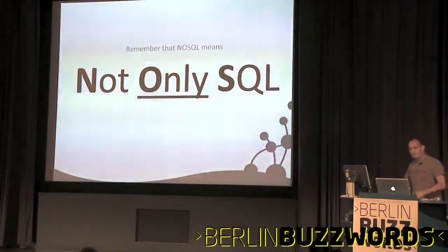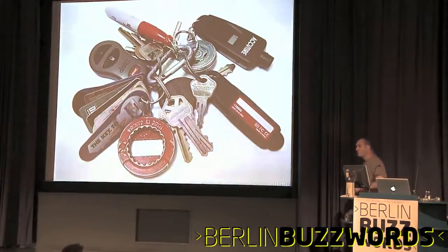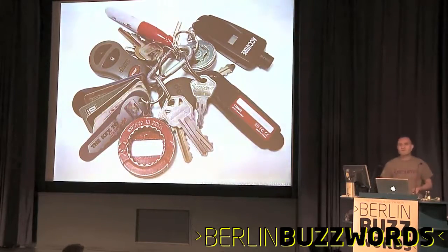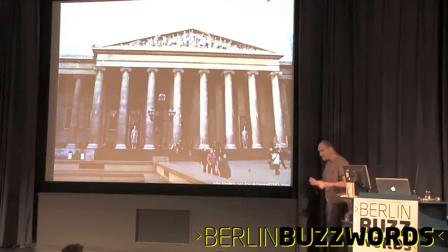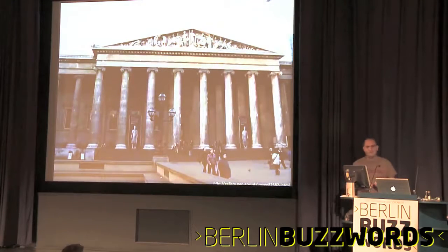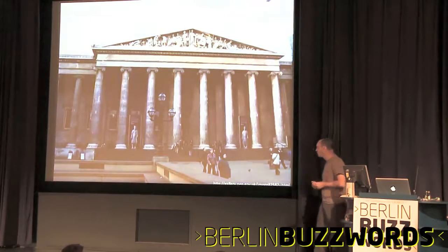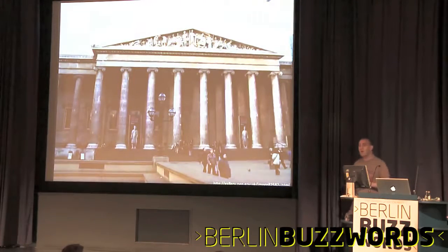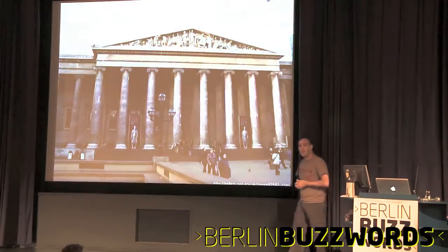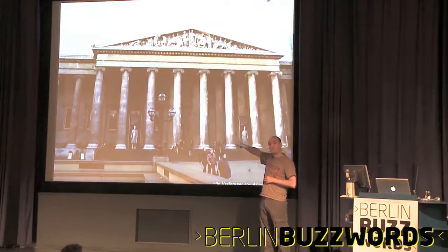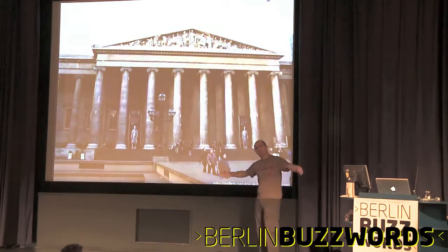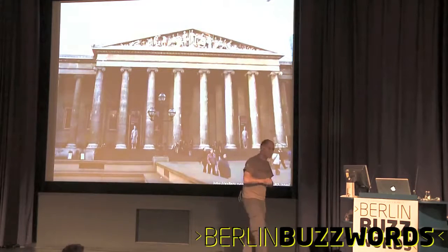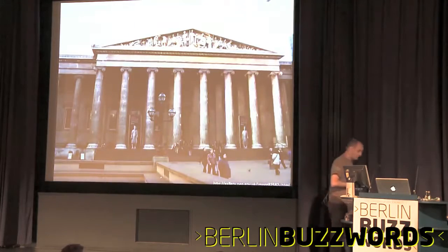We've seen things like key-value stores for simple data at high scale and high availability. We've got things like column stores - effectively nested hash map data stores - based on similar principles to KV stores but with more structure. The Cassandra and HBase guys may well argue that they have the most scalable column store on the planet. They don't. This is the most scalable column store on the planet - this is the British Museum, where we keep all the stuff that we nicked from around the world. It has columns, making it the most scalable column store on the planet.